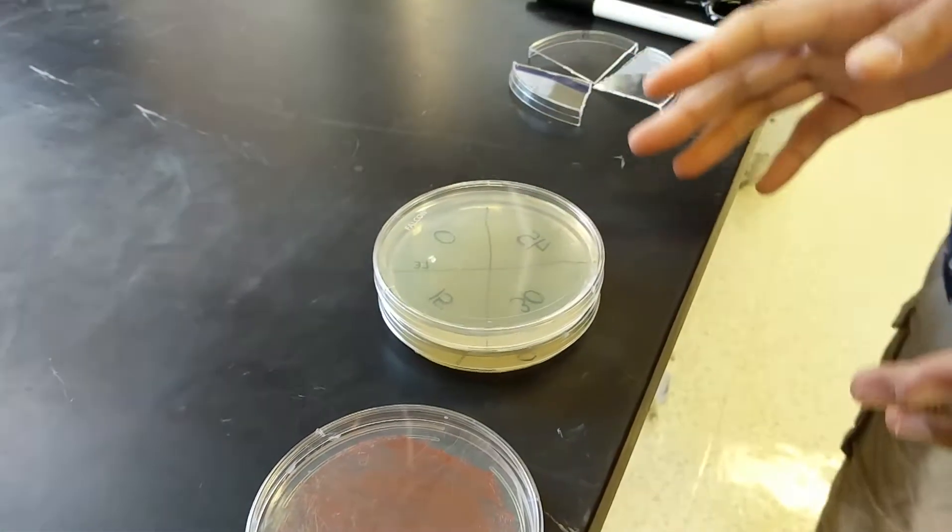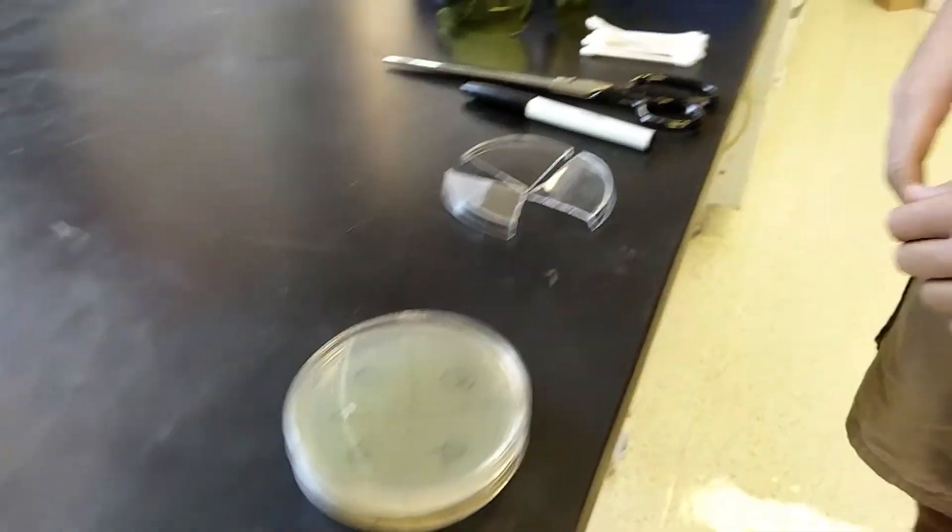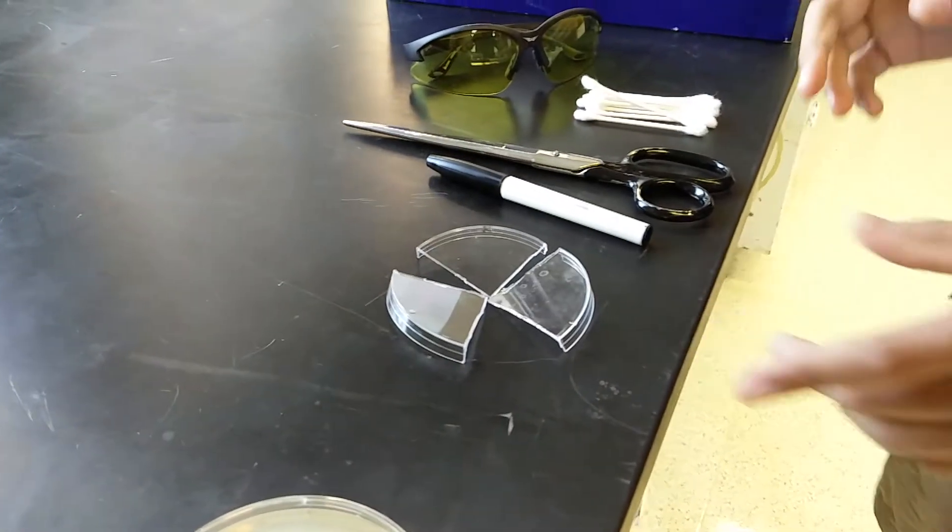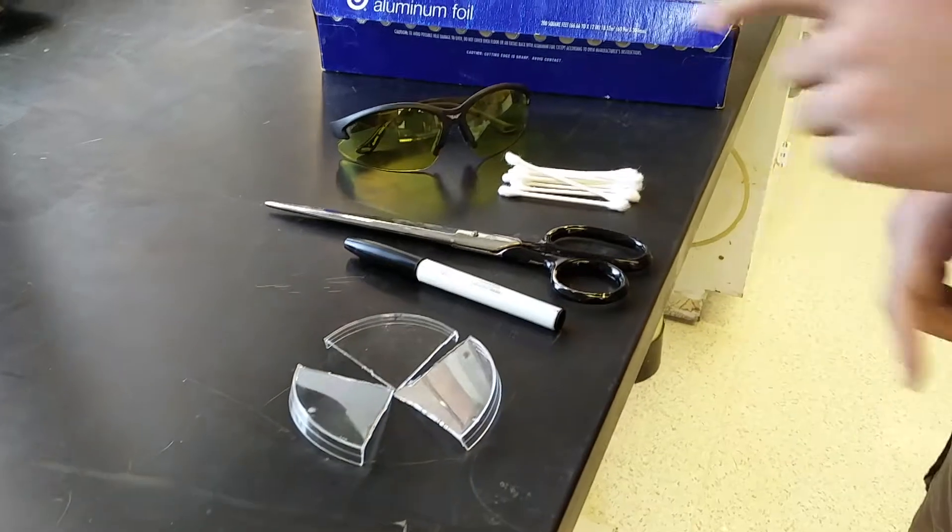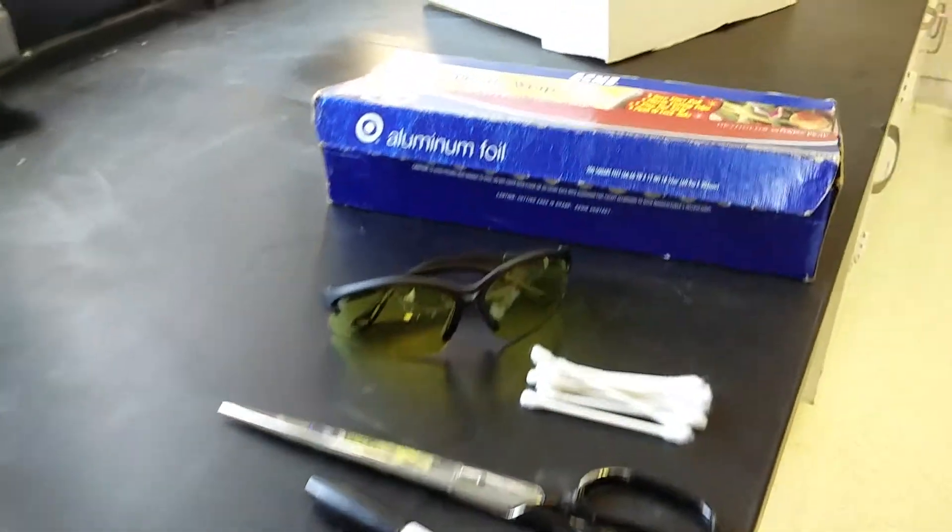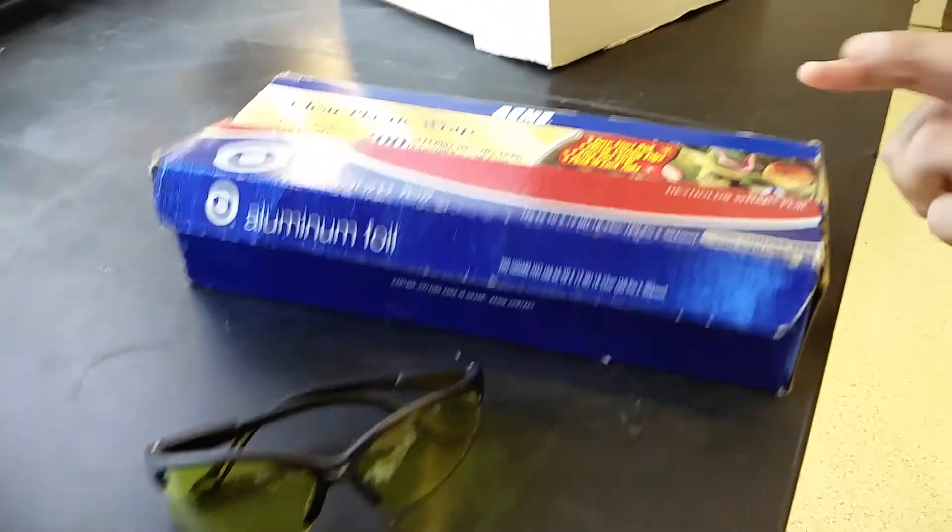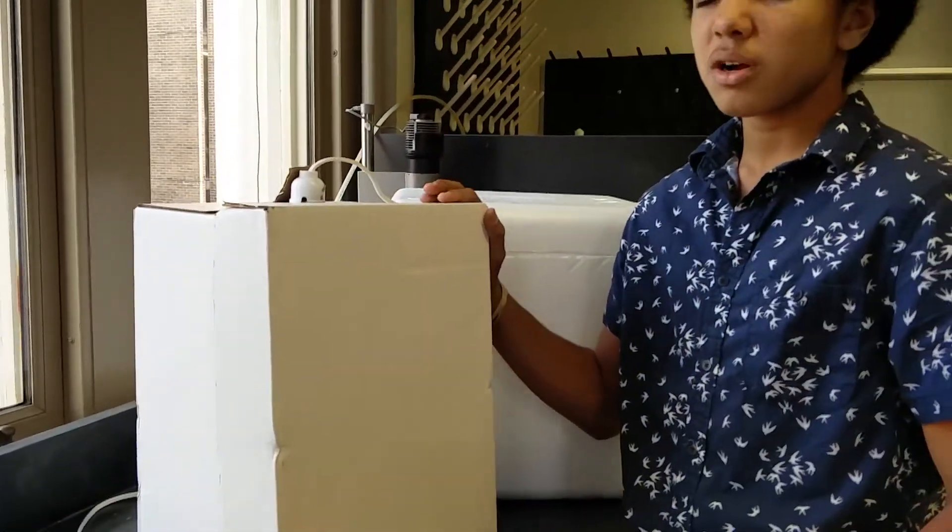Depending on the size of the class, a certain number of high salt agro plates, quarters of cut-up petri dish lids, a pen, scissors, q-tip, protective goggles, aluminum foil, and saran wrap. Most importantly you'll need the exposure box.